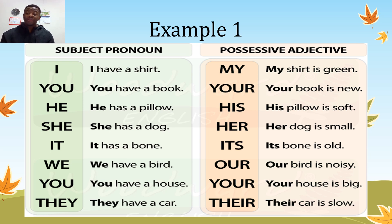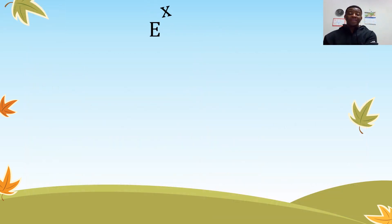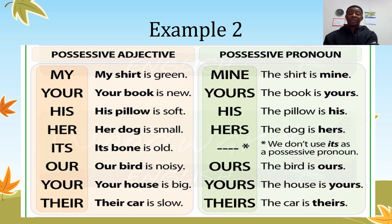We have a bird — our bird is noisy. You have a house — your house is big. They have a car — their car is slow.